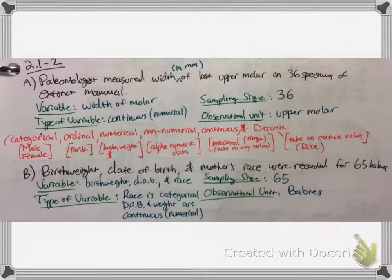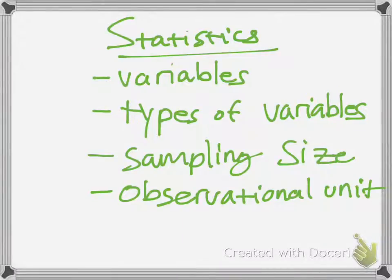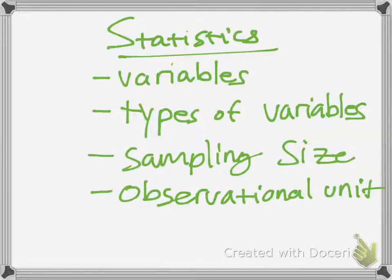Those are some examples of what was covered here: variables, types of variables, sampling size, and observational units. If you can identify these in a statistical study, then it'll be easier to interpret your data. Hope this helps. Thanks so much.